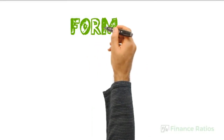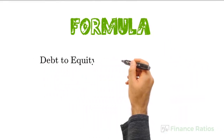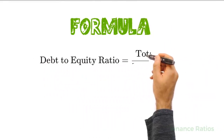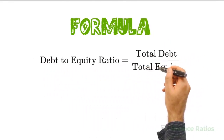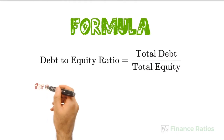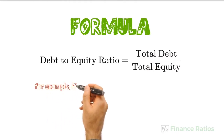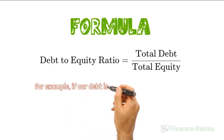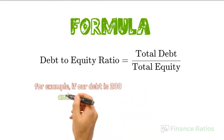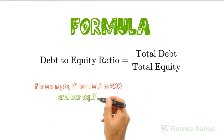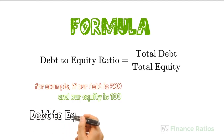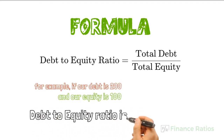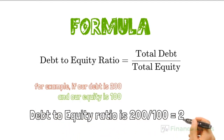Let's look at the formula. Debt to equity ratio equals total debt divided by total equity. In the most basic example, if our total debt is 200 and our equity is 100, our debt to equity is 200 divided by 100, which equals 2.